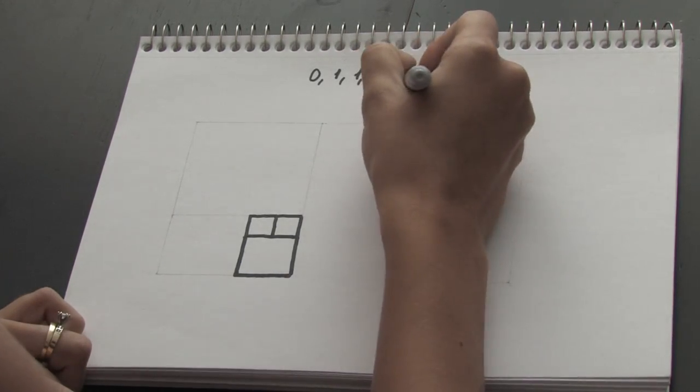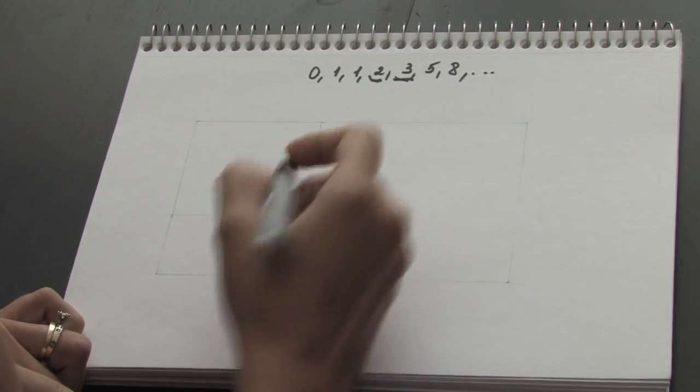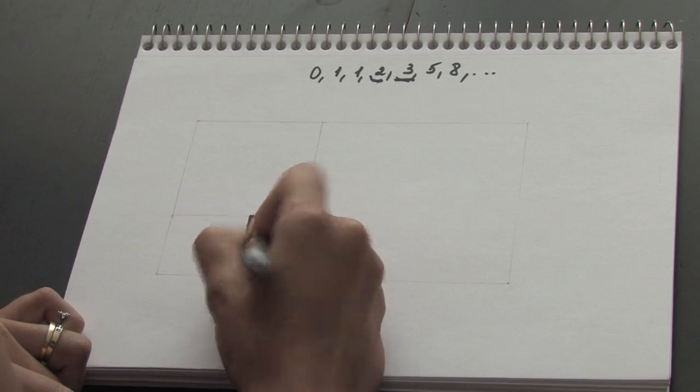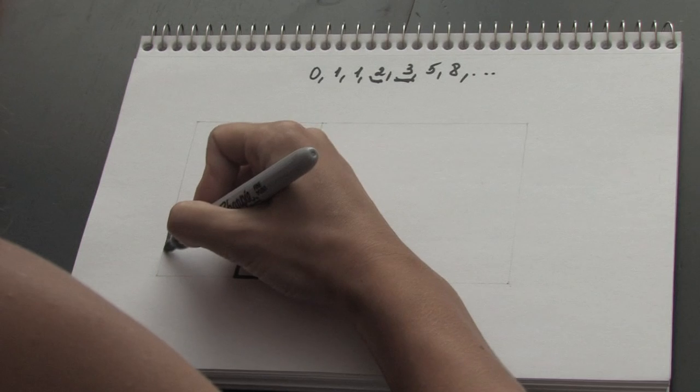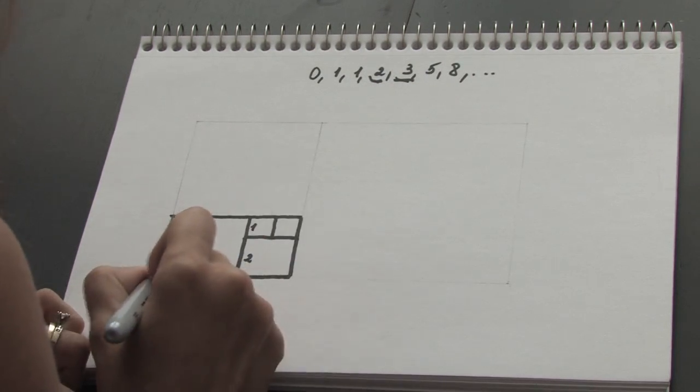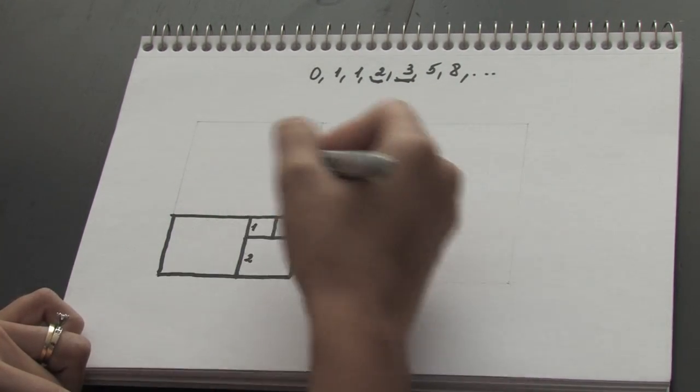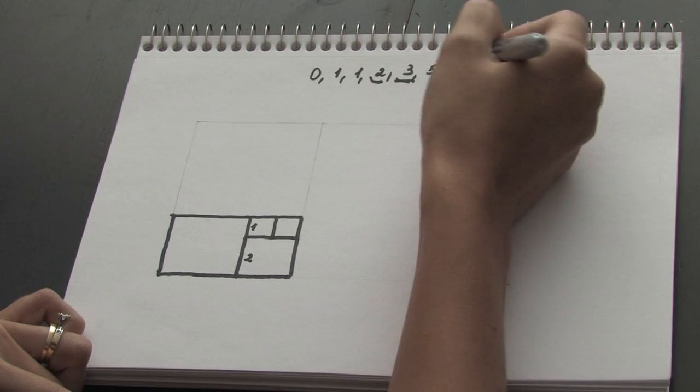The next number is 3, and you see this is 1, this is 2 units, and here is my fourth square, 3 by 3. The next number is 5.